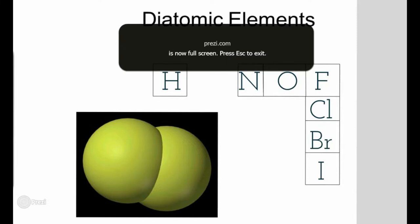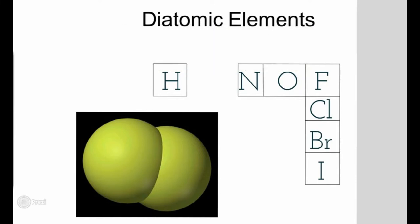We call these the diatomic elements. The diatomic elements basically mean they can't be by themselves. There are seven, and they're easy to memorize — all you need is a periodic table. They are hydrogen, nitrogen, oxygen, fluorine, chlorine, bromine, and iodine. They form a little L-shape or upside-down L-shape on the periodic table — kind of like a Tetris piece. There are seven of them, and they make a seven on the periodic table. That's how I memorized them.